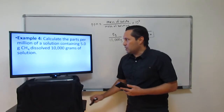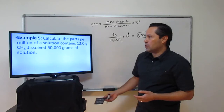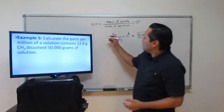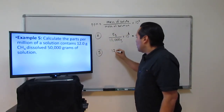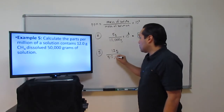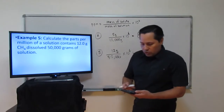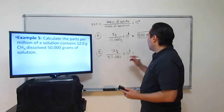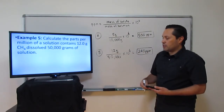Next let's move to example 5 — a very similar question. Calculate the parts per million of a solution containing 12 grams of CH4 dissolved in 50,000 grams of solution. So our numerator is 12 (mass of solute), over the denominator 50,000 (mass of solution), multiplied times 1 million since we're solving for parts per million. That gives us 240 ppm. That takes care of example 5.